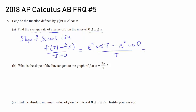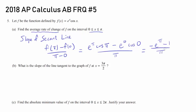The cosine of pi is negative 1, so we have negative e to the pi. The cosine of 0 is 1 and e to the 0 is 1, so we have minus 1, all over pi. So that's the answer to the first one.